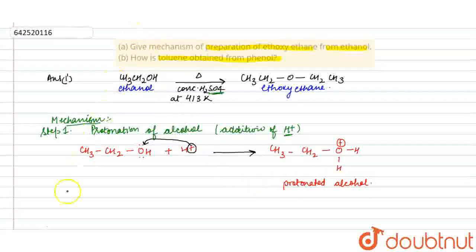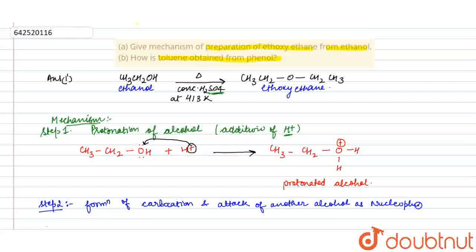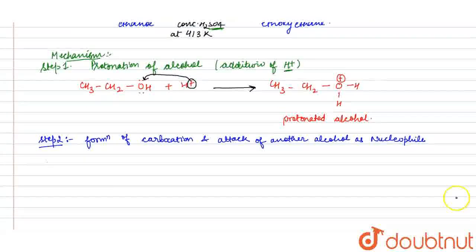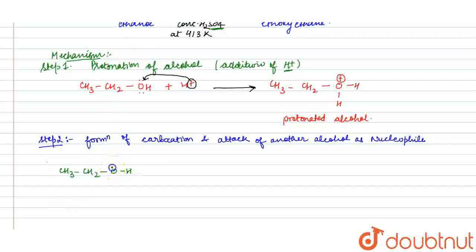The next step is formation of carbocation and attack of another alcohol as nucleophile. The reaction is CH3CH2OH-positive with two lone pairs of electrons, plus CH3CH2OH. It is protonated alcohol.